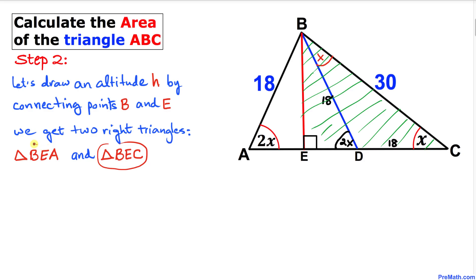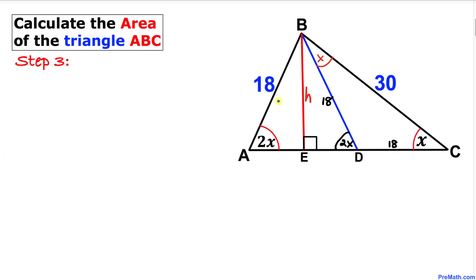Let's focus on right triangles BEA and BED. We know these angles are 90 degrees, and both share the 2x angle, so the remaining angles must be the same as well.